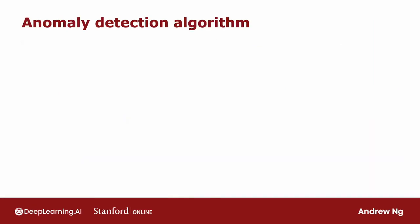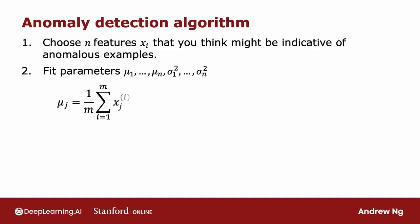So let's put it all together to see how you can build an anomaly detection system. The first step is to choose features xᵢ that you think might be indicative of anomalous examples.